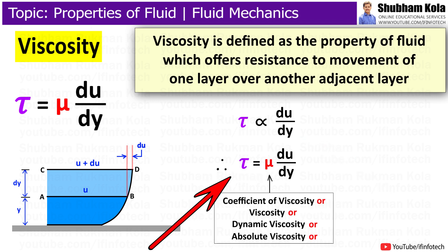Therefore, shear stress equals μ times du/dy, where μ is the constant of proportionality called coefficient of viscosity or viscosity. Viscosity is also known as dynamic viscosity or absolute viscosity, and the unit of viscosity is Newton second per meter squared.